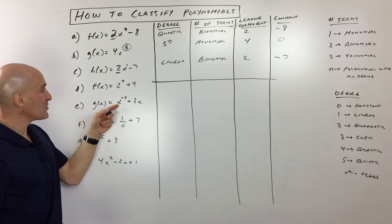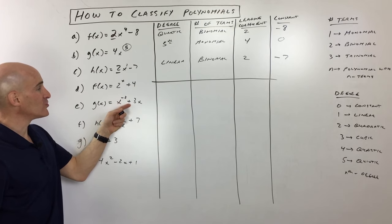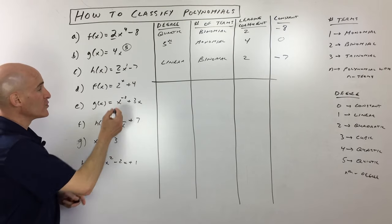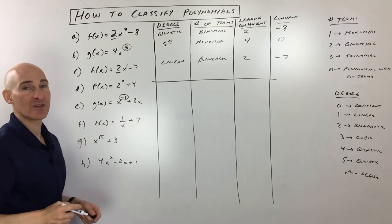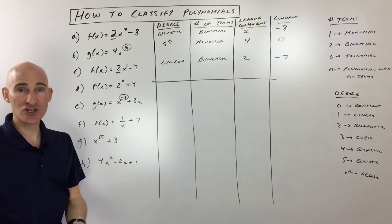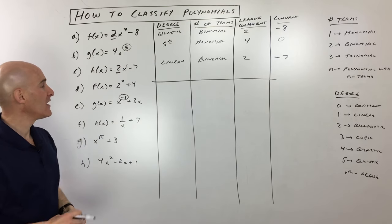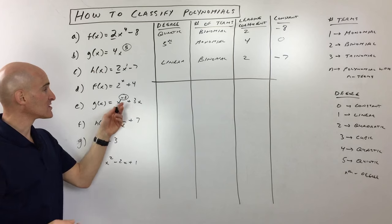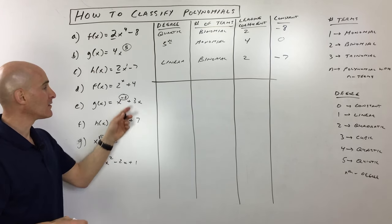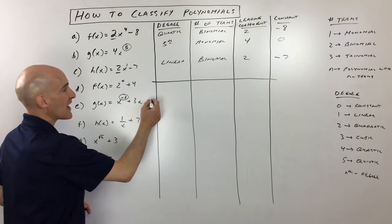The next one here, you can see we've got x to the negative two plus 3x. This one is also not a polynomial. You don't want to have a negative exponent. That's considered not a polynomial. You want these exponents to be integers. You want them to be positive. So this one doesn't fall into that category. This is actually like one divided by x squared plus 3x. So again, this is not a polynomial.